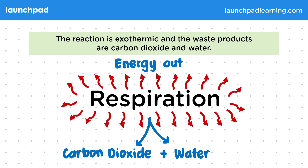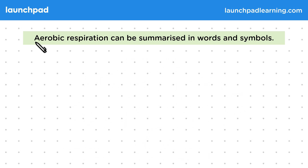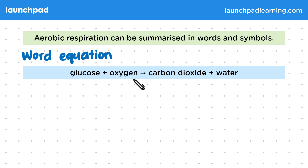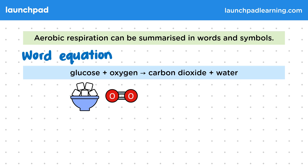How do we summarize the respiration equation? Aerobic respiration can be summarized in words and symbols. So let's do the word equation first: glucose plus oxygen gives carbon dioxide and water. So glucose, a sugar, reacts with oxygen, with energy being transferred out and carbon dioxide and water being released.